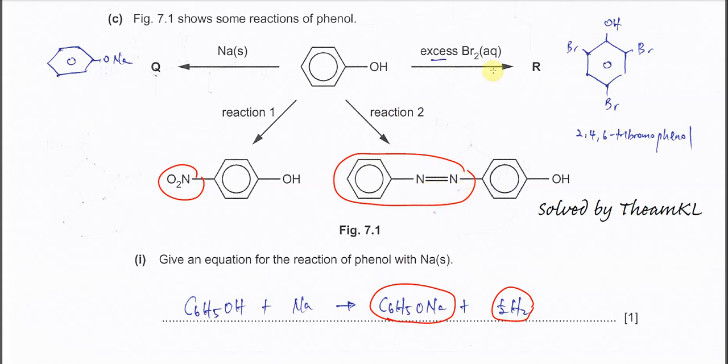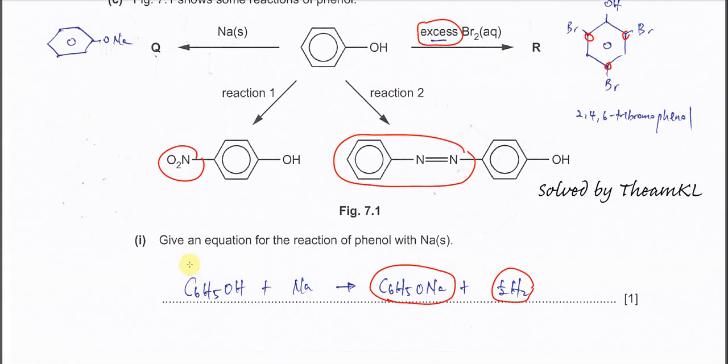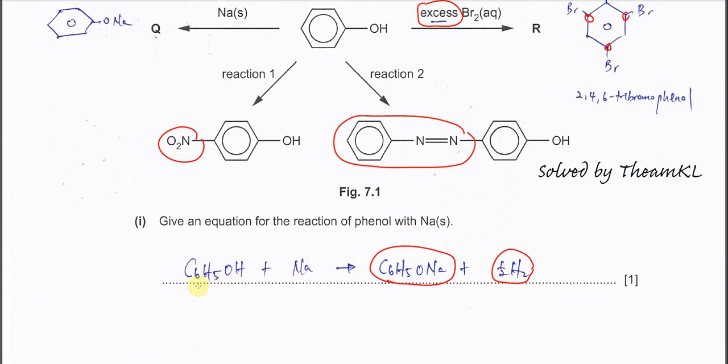For the last reaction with excess bromine, this is a bromination or halogenation. Because it's in excess, this phenol will direct 2, 4, 6 substitution. It will form 2,4,6-tribromophenol. These are all the reactions. Part one equation is already given here: phenol with sodium forms sodium phenoxide and hydrogen gas.